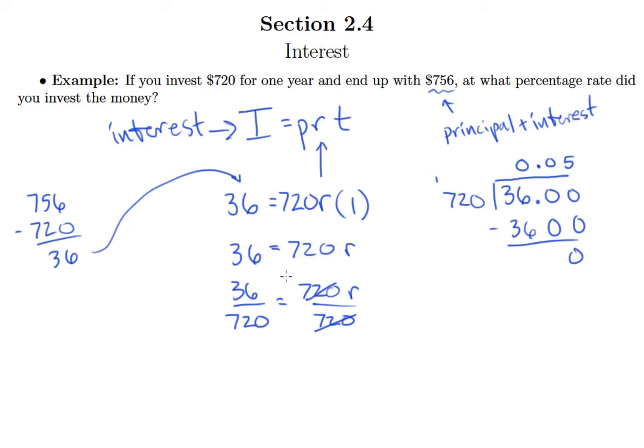So remember that this R we're finding is the decimal form of the percent. So when we report our answer, we're of course going to say 5% annual interest.